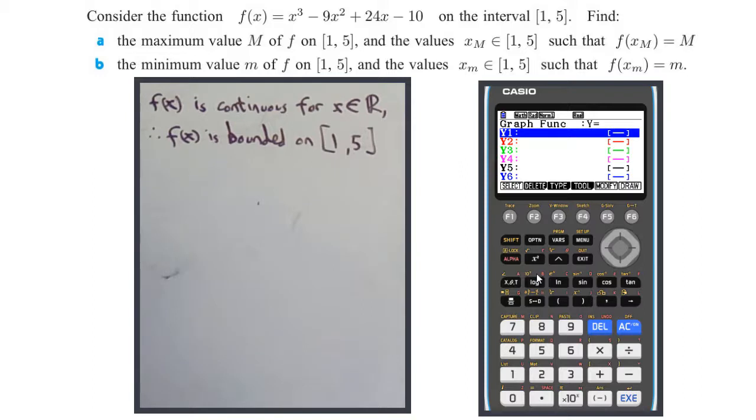So x³ - 9x² + 24x - 10. That's the function. Draw it. It's clearly the wrong window. Check your view window - x min should be 1, that's okay. X max should be 5.